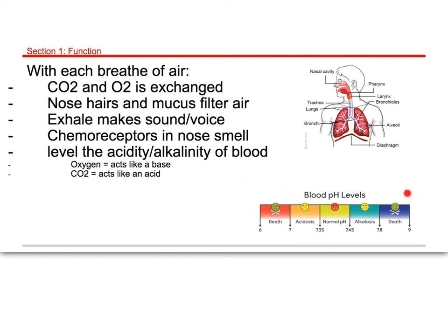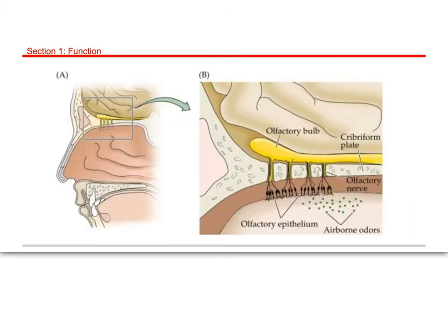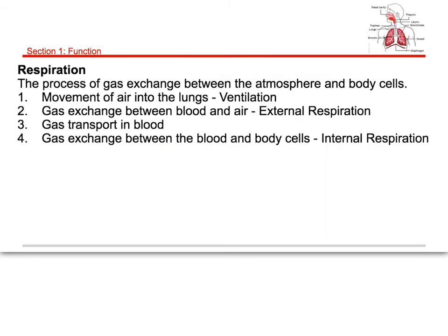If your blood gets too acidic or too basic, it will start killing cells — and that's what you don't want. This slide covers how we sense smell. Air taken in through the nose moves past chemoreceptors — shown here as small green dots representing airborne odors. We have olfactory epithelium and olfactory nerves. The olfactory bulb receives signals as chemoreceptors latch onto airborne odors, sending signals directly up to the brain to perceive and interpret smell.